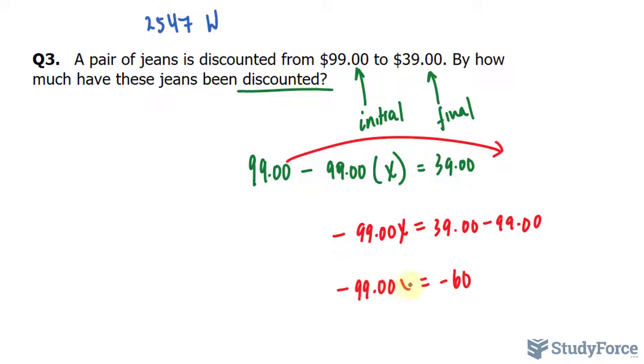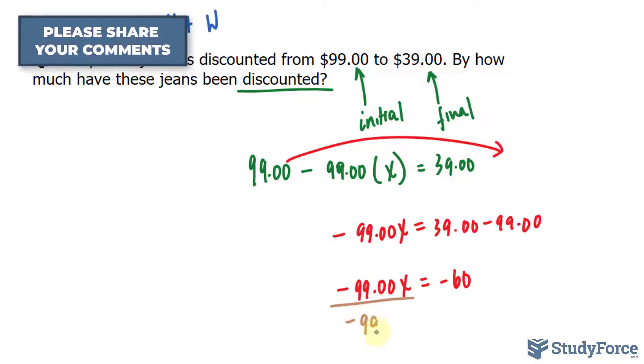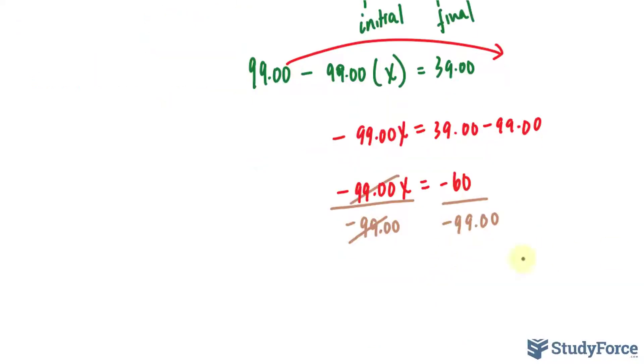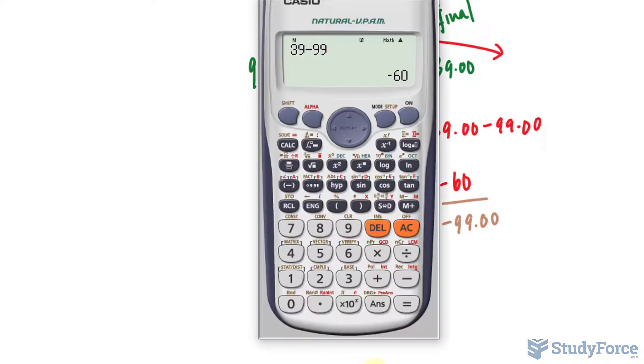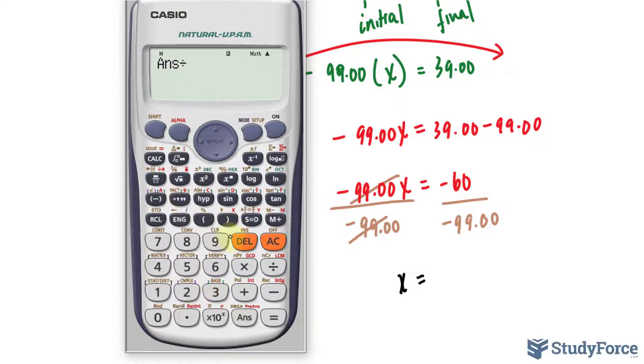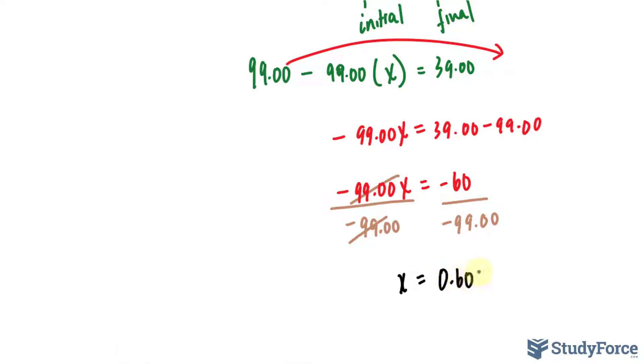And the last step is to divide both sides by negative 99. They cancel out on that side. And on the right side, we have two negative numbers that are being divided. If you have two negative numbers that are being divided, you end up with a positive output. So dividing negative 60 by negative 99 gives you 0.60 repeating.